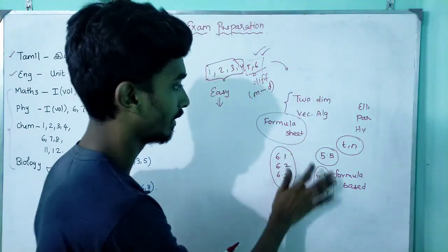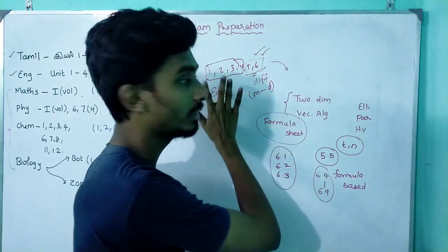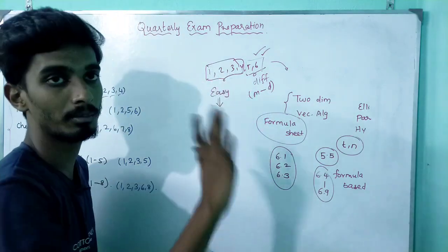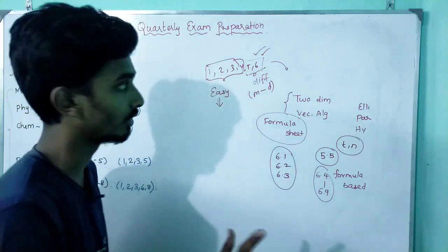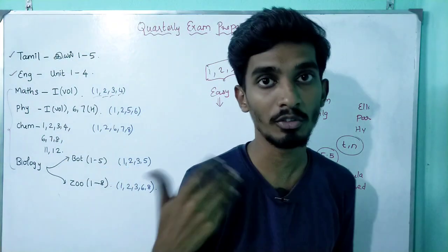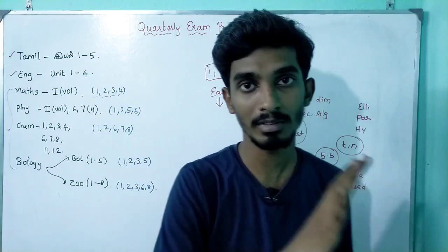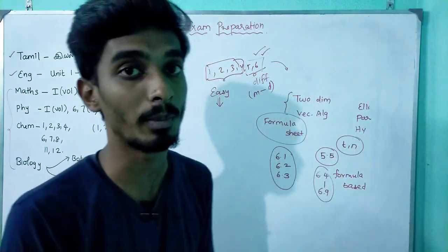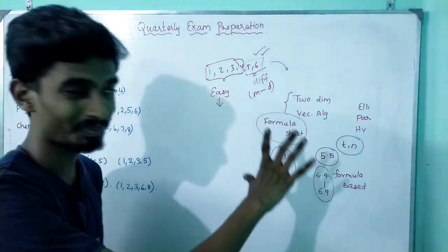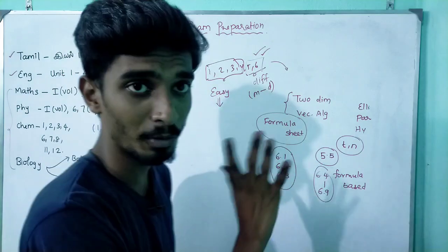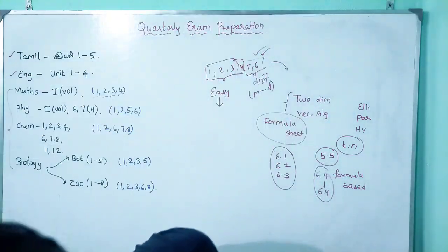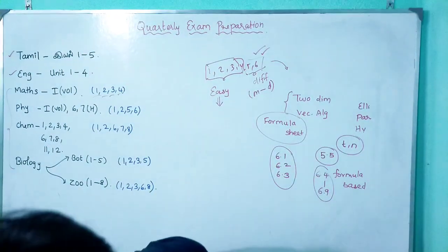My suggestion for Maths: complete chapters 1, 2, 3, 4 first, then move to chapters 5 and 6 — those take more time. This is the study plan for how to cover Maths.